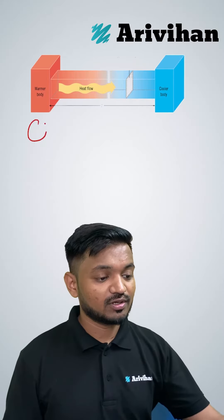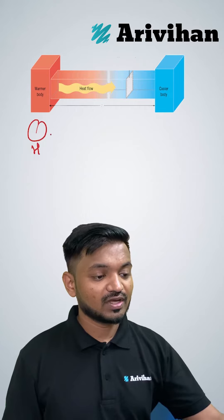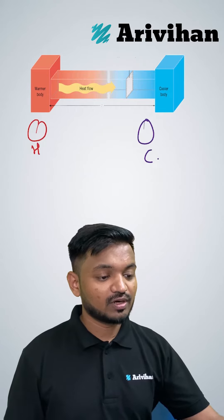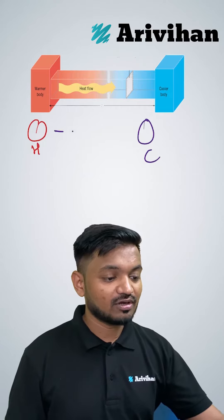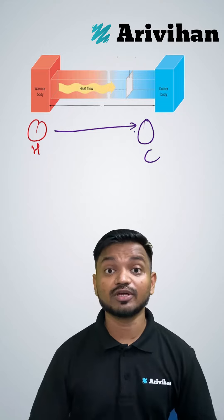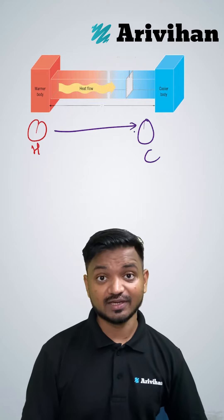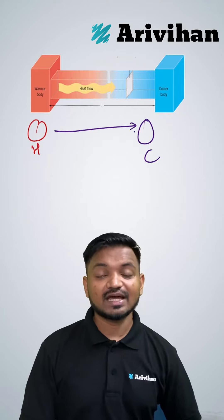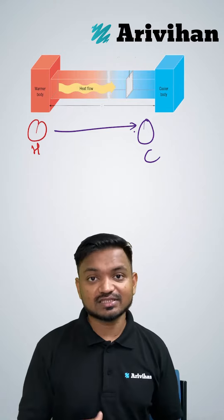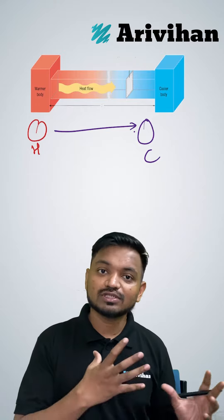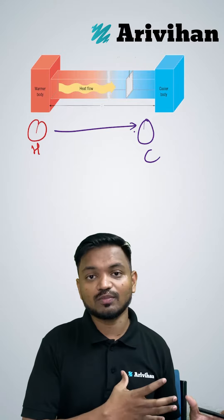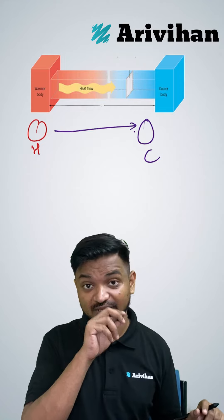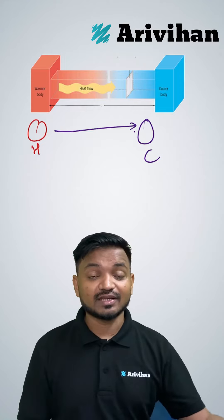If you have a hot body and if you have a cold body, the heat always flows from hot body to cold body. So if it is like this, then what kind of flow is this? How does the heat go from a hotter region to a colder region is what we are trying to understand today.